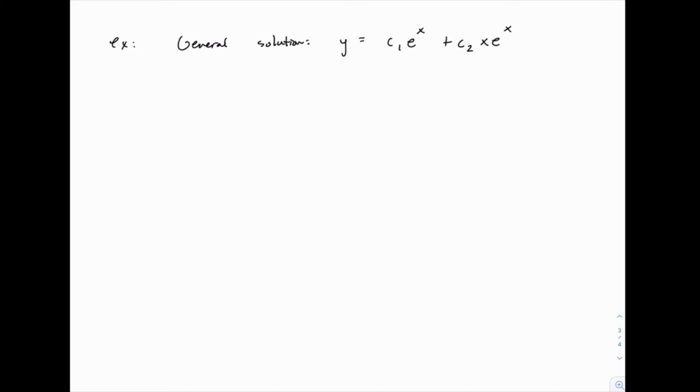Suppose we were also given initial conditions. Now notice that with two unknown constants, c1 and c2, we need two pieces of information to solve for those two constants. So in this case we would need two initial conditions.